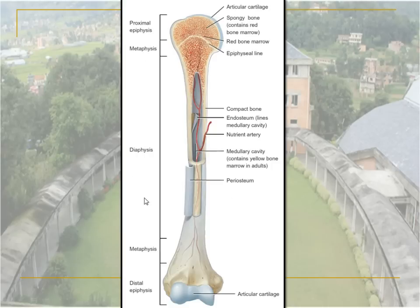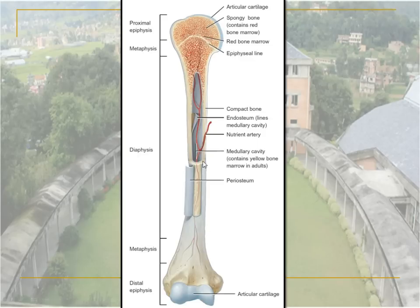This is the gross morphology of the long bone. The long bone has two ends: the proximal end and the distal end. These proximal and distal ends are externally covered with articular cartilage, usually hyaline cartilage. The composition of these two ends, which are also called the epiphysis, consists of the spongy type of bone containing red bone marrow.